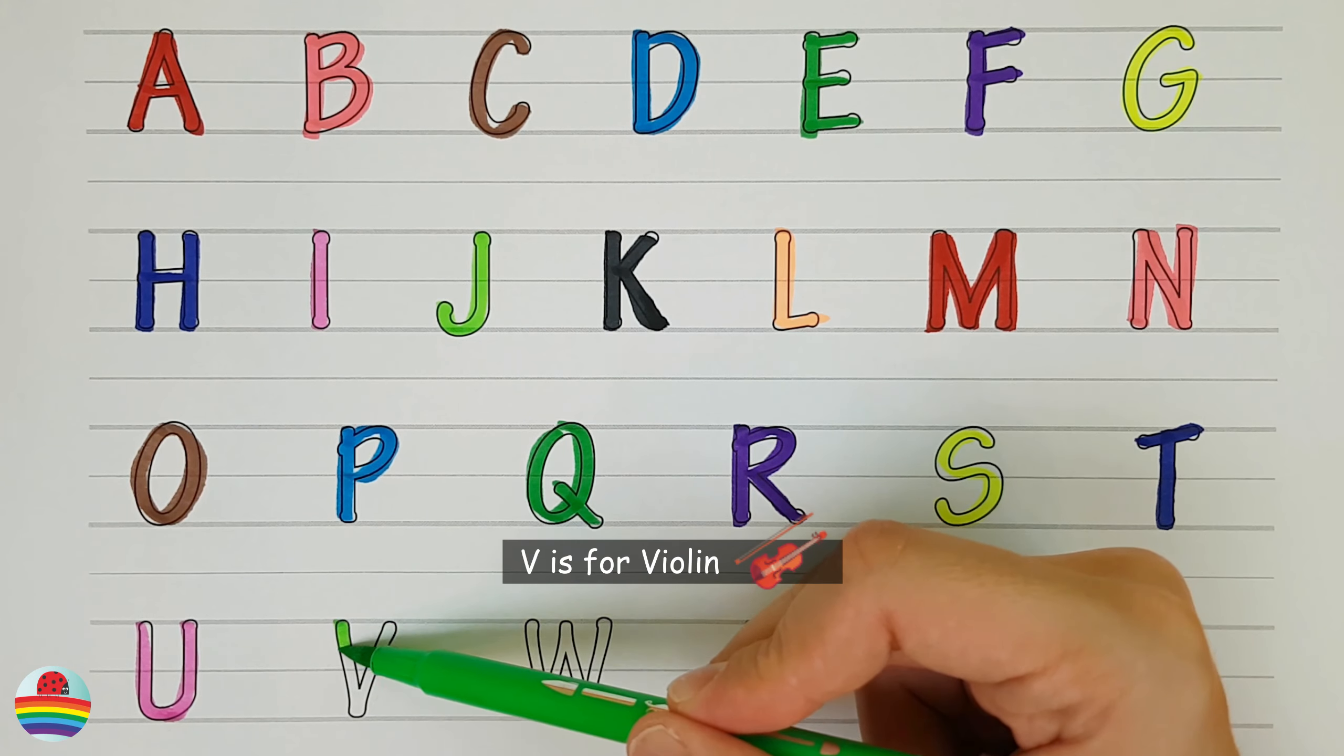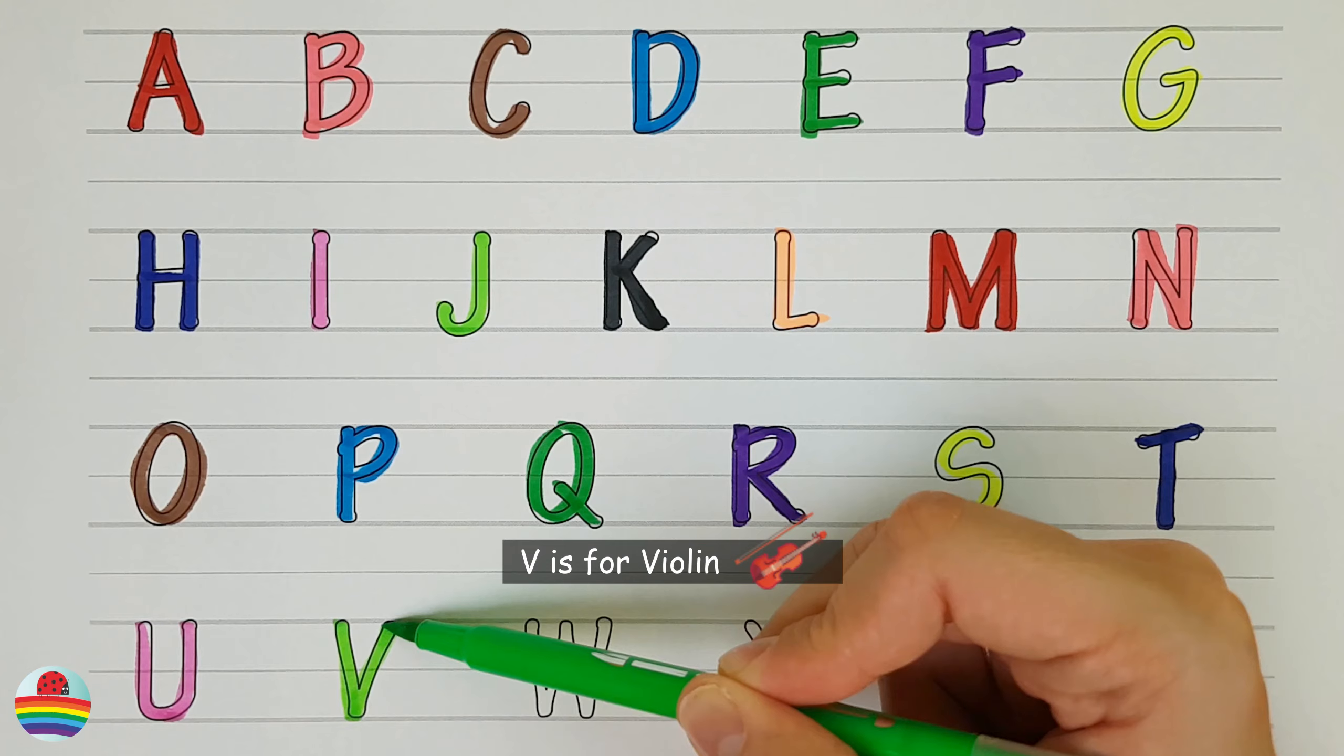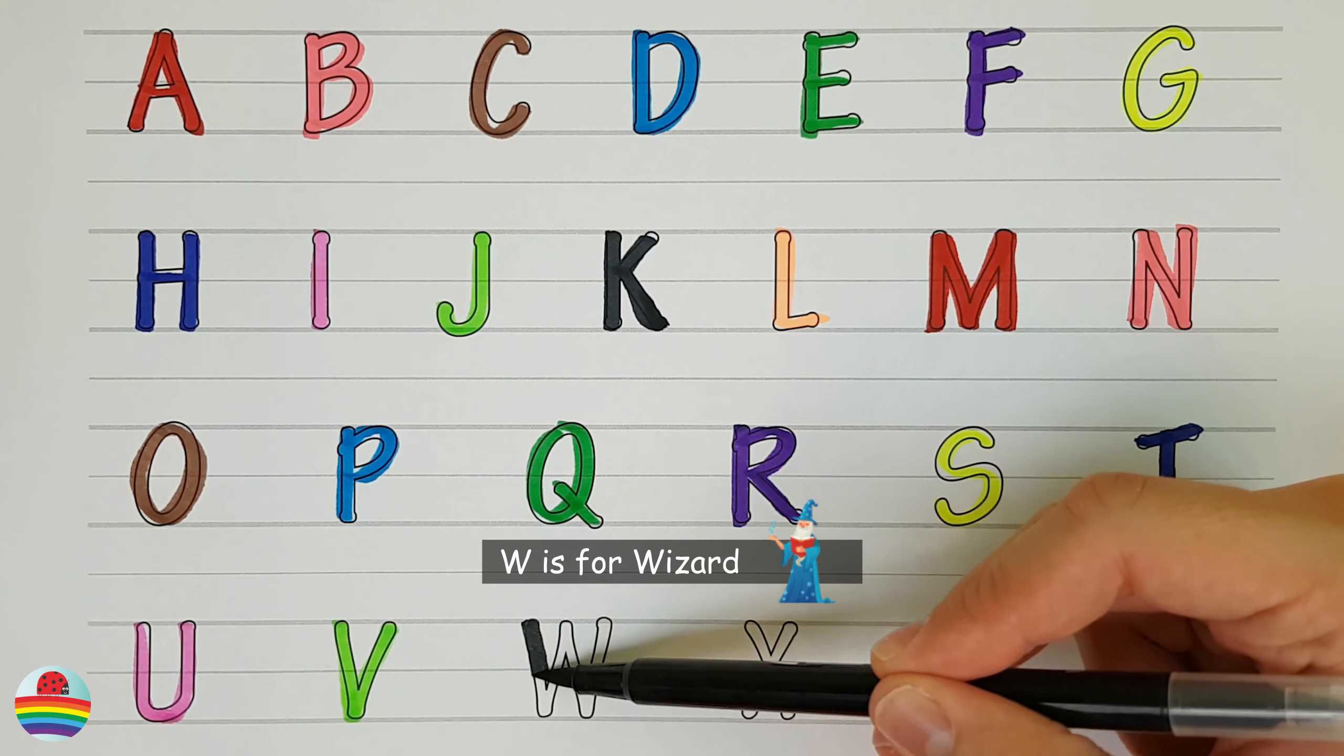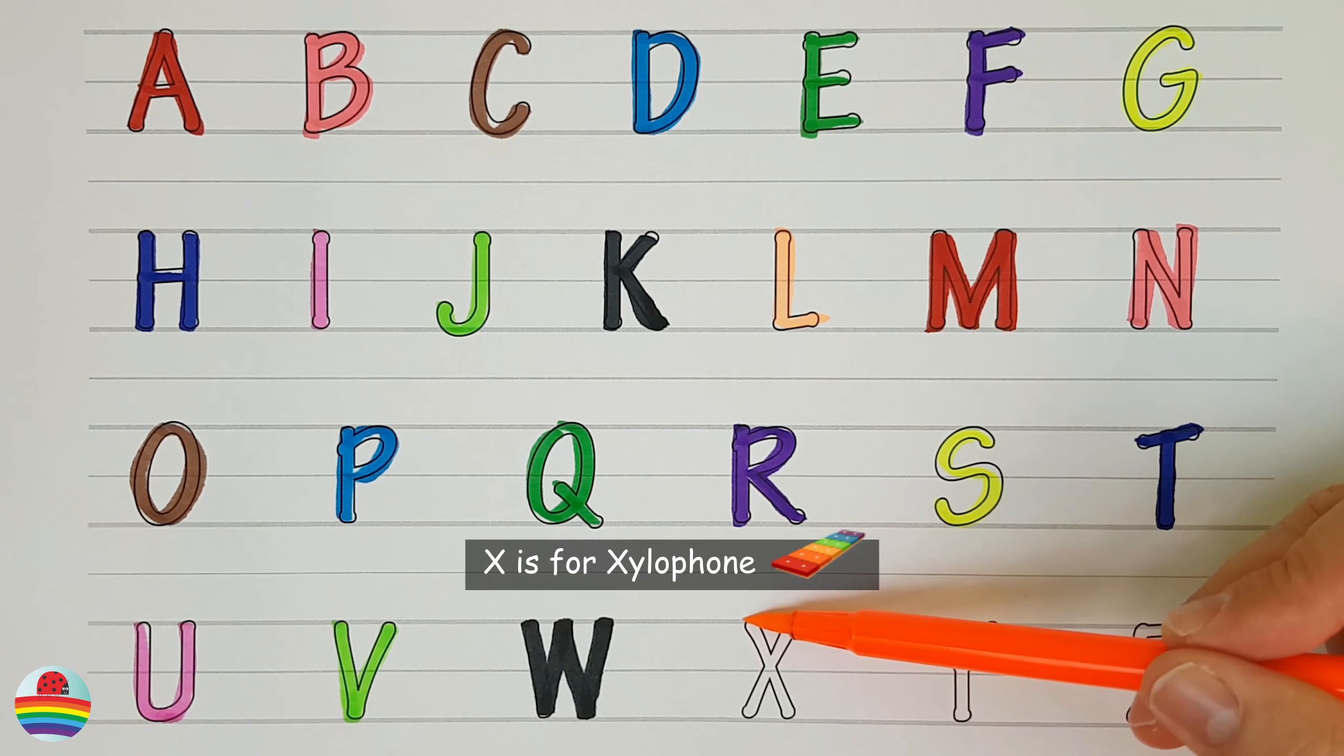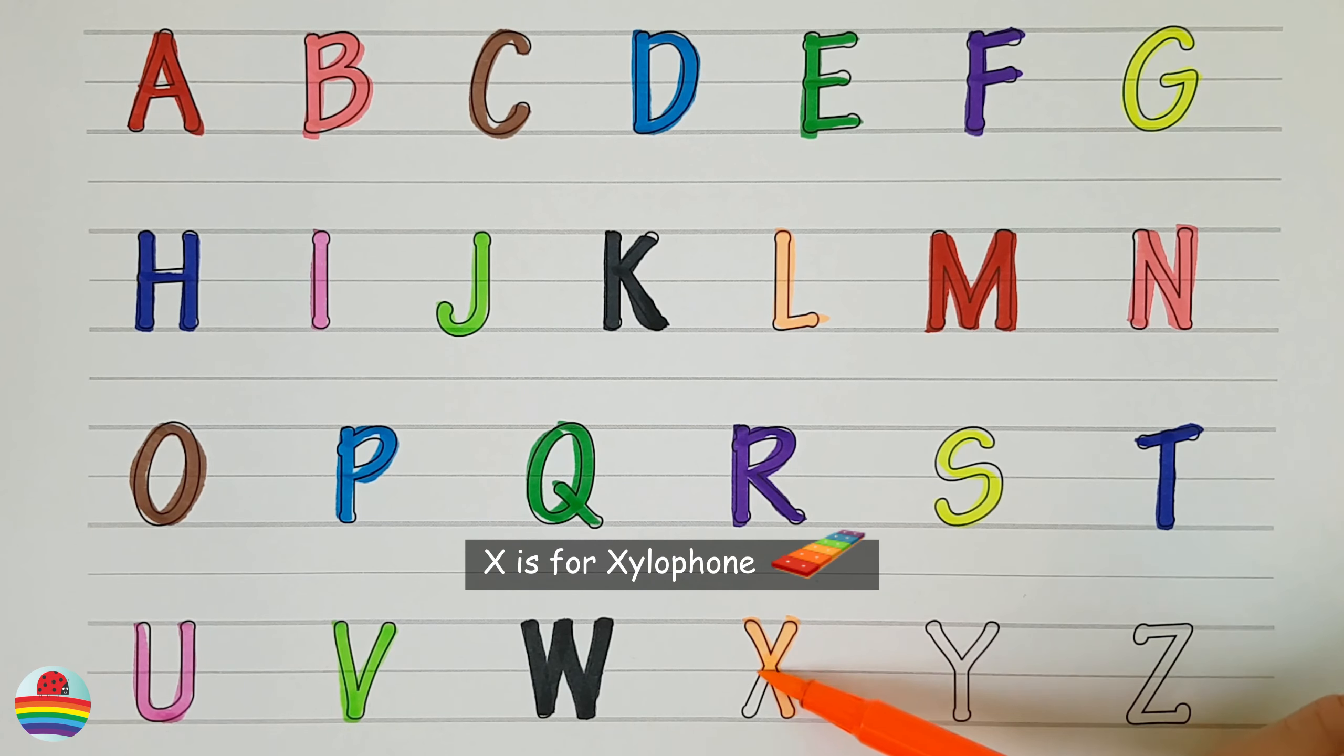V. V is for Violin. V. W. W is for Wizard. W. X. X is for Xylophone. X.